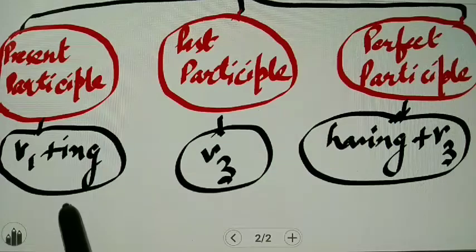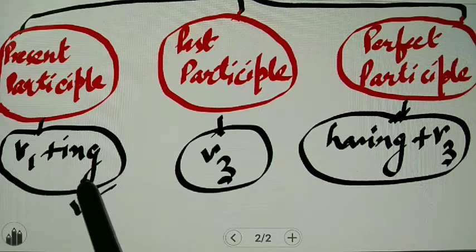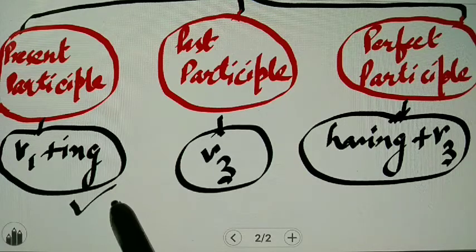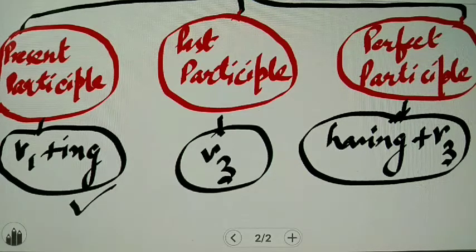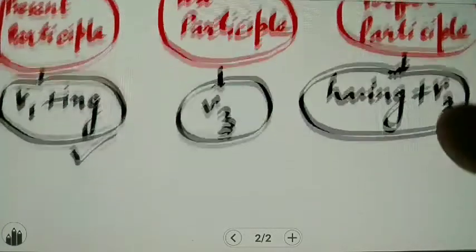As you saw, gerund is also verb plus ing, and present participle is also first form plus ing — they are the same. So what are the differences between participle and gerund? That is what we will see right now.